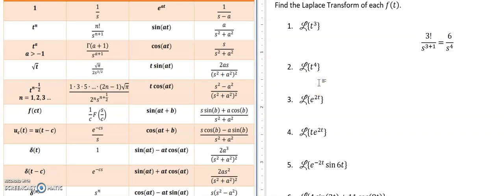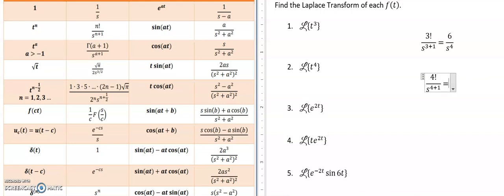We're going to use the same formula to do t to the 4th, so we would have 4 factorial divided by s to the 4 plus 1 power, and 4 factorial is 1 times 2 times 3 times 4, so 6 times 4 is 24 over s to the 5th. So this coefficient is going to keep changing for each of the powers.